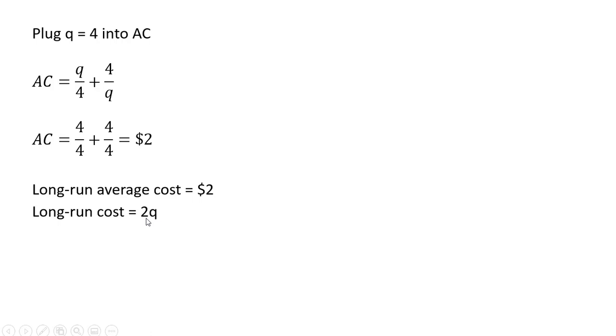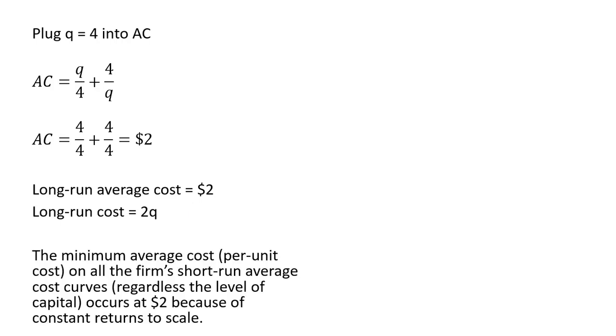And the long-run cost equation will be 2Q. So if you were to take the long-run cost equation 2Q, divide it through by Q, you get back long-run average cost. So that's the easy way to derive long-run average cost. Get the short-run average cost, find where it's minimized, and you'll have your horizontal long-run average cost curve. Again, this only works with constant returns to scale. So the minimum average cost or per unit cost on all the firm's short-run average cost curves, regardless of the level of capital, occurs at $2 because of constant returns to scale.